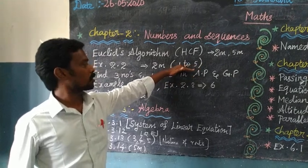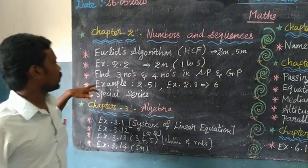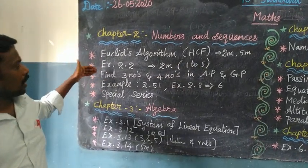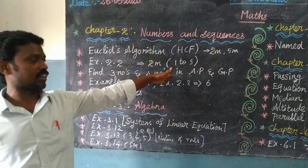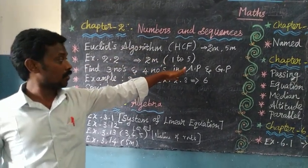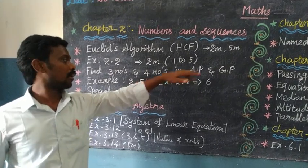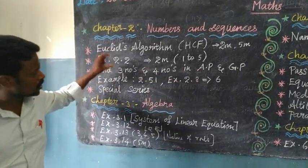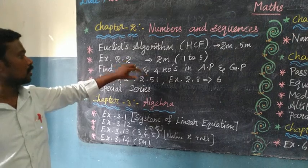Maximum expected 2 marks in AP and GP - find 3 numbers and 4 numbers. This is the most expected area, 1 to 5 questions, the easiest way to solve these.